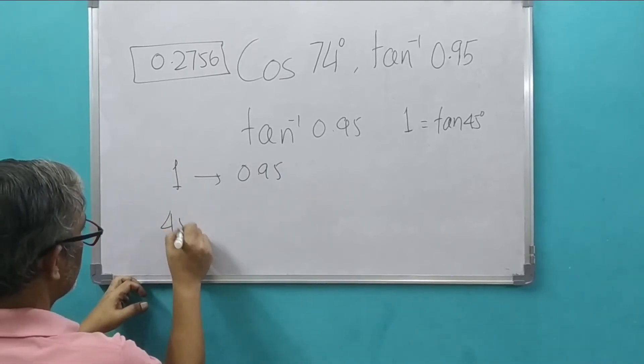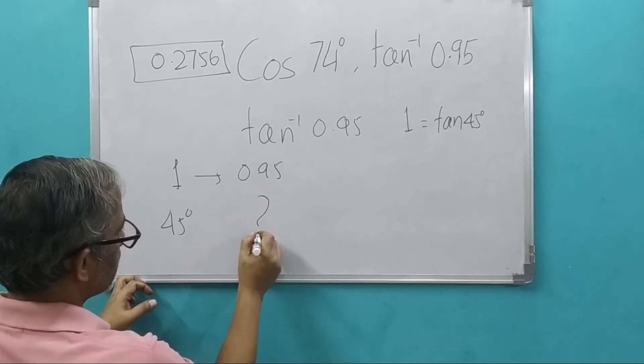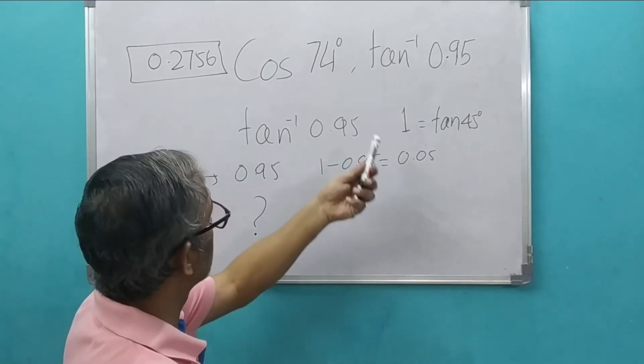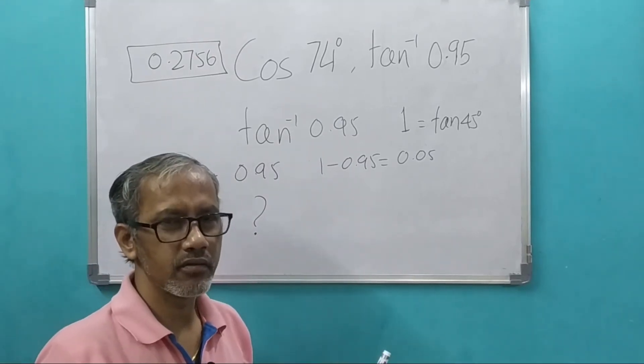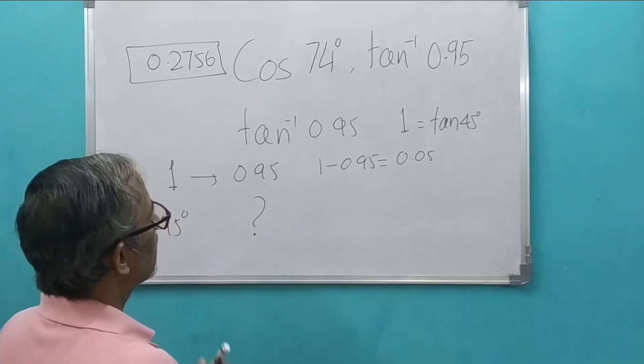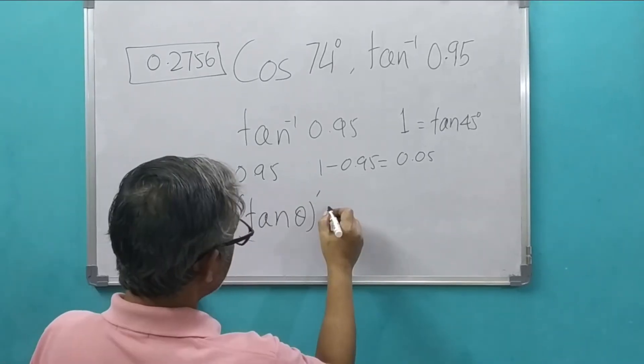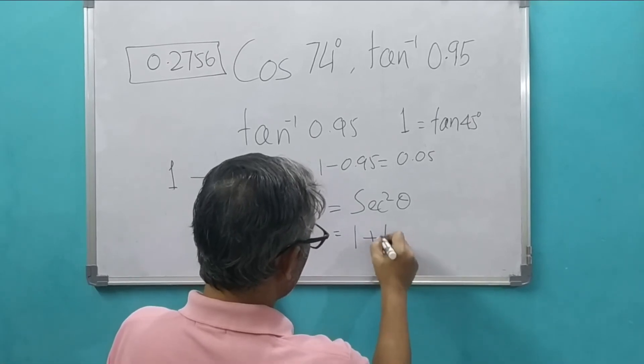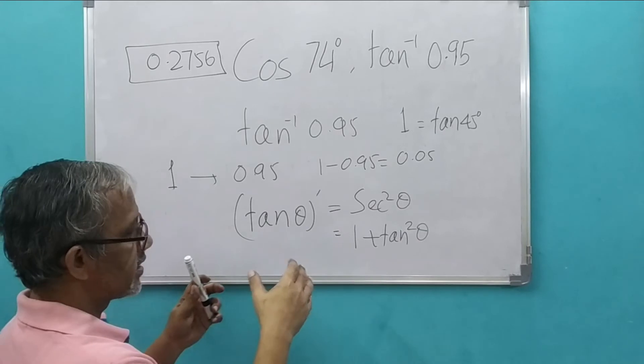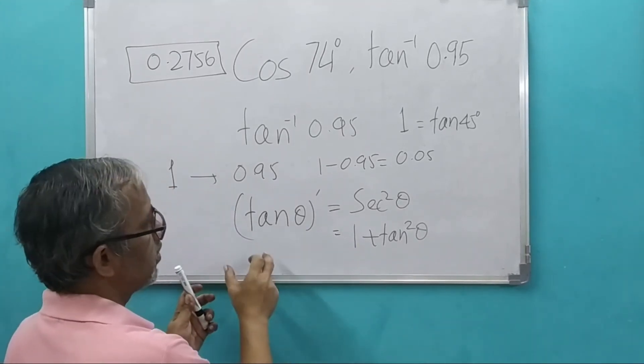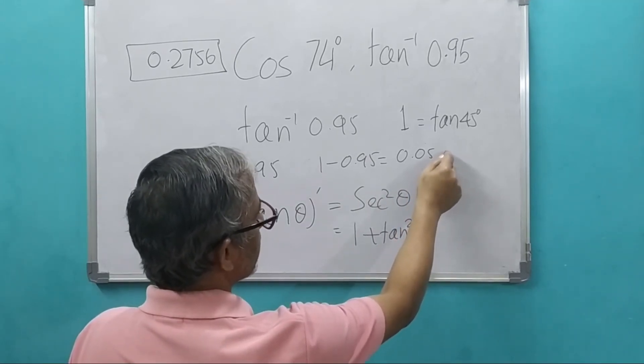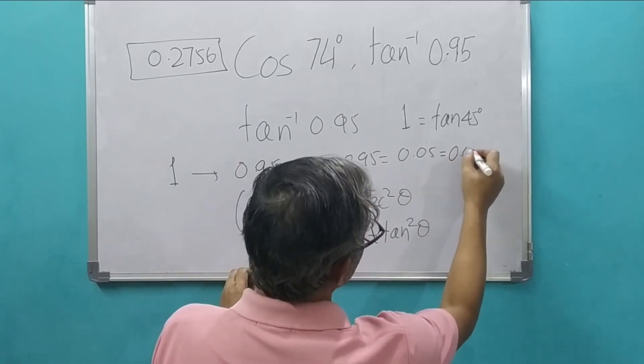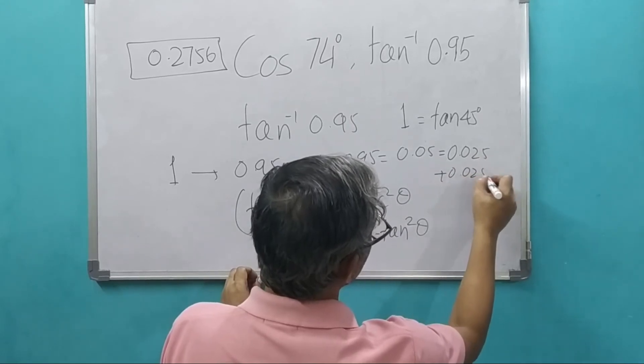We have to reach to this 0.95 from 1. For 1, it is 45 degrees and for 0.95, we have to find out the value. There is a gap of how much? 0.05. The deviation of the functions are dependent on the derivative or the rate of change of that function at any angle. And rate of change of tan function that is equal to sec square theta, 1 plus tan square theta. It changes the square of that initial value. So it will go in steps of very small values. So we will have to split it up into parts 0.025 plus 0.025.